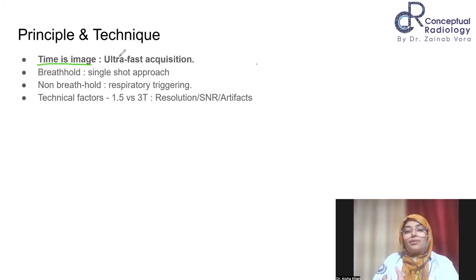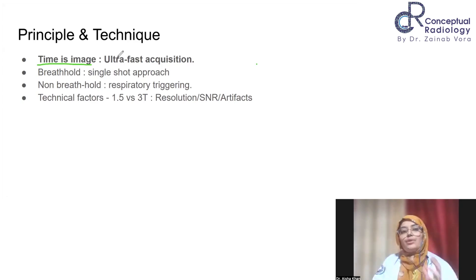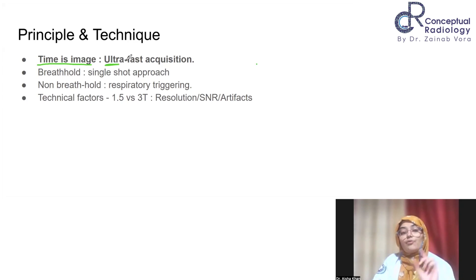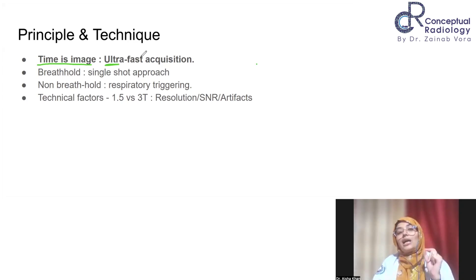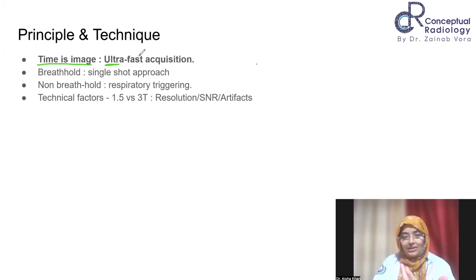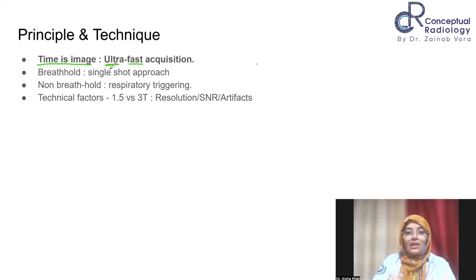The basic punchline is: time is image — if a sequence is very long, image quality will deteriorate, so you take a sequence giving maximum detail in less time. Apart from being heavily T2-weighted, the second key aspect is ultra-fast. Sequences like HASTE and FRFSC are both heavily T2-weighted and ultra-fast, belonging to the turbo spin-echo family.